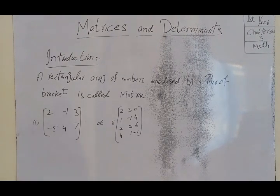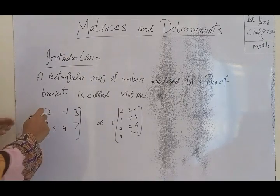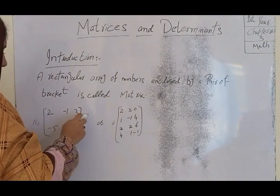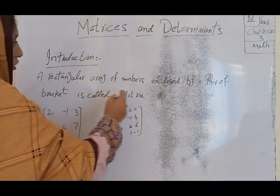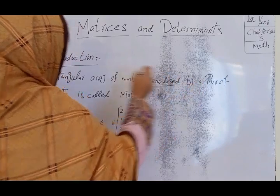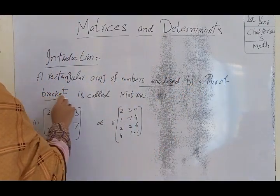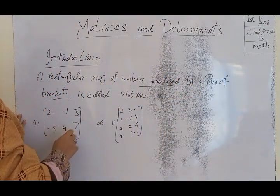A matrix is a rectangular array of numbers enclosed by a pair of square brackets.